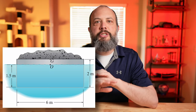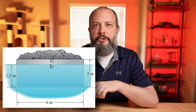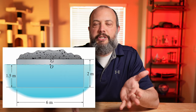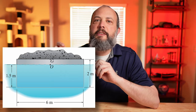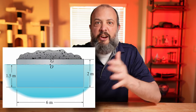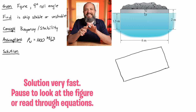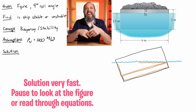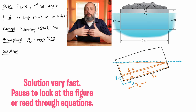So let's consider this barge: six meters wide, two meters tall, 1.5 meters of that is submerged, and the center of gravity is right at the very top of the barge because it's carrying a lot of overflowing stuff. So will this barge be stable if it rocks at a nine-degree angle? Will it right itself or will it tip over?